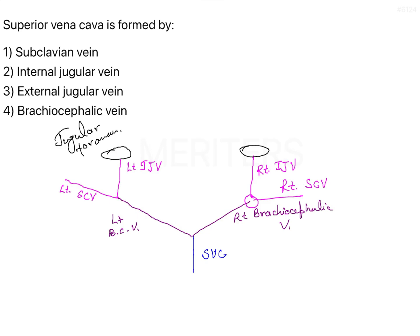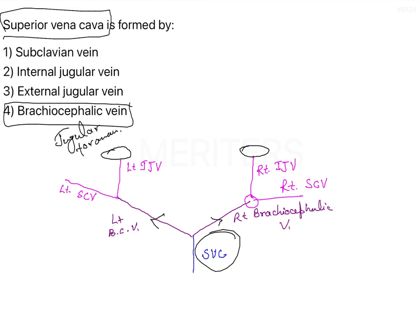This is the whole venous drainage of the head and neck area. To summarize: the Superior Vena Cava branches into the right and left brachiocephalic veins, and these brachiocephalic veins are each formed by the internal jugular vein and the subclavian vein joining together, which then form the brachiocephalic veins, which in turn form the Superior Vena Cava.